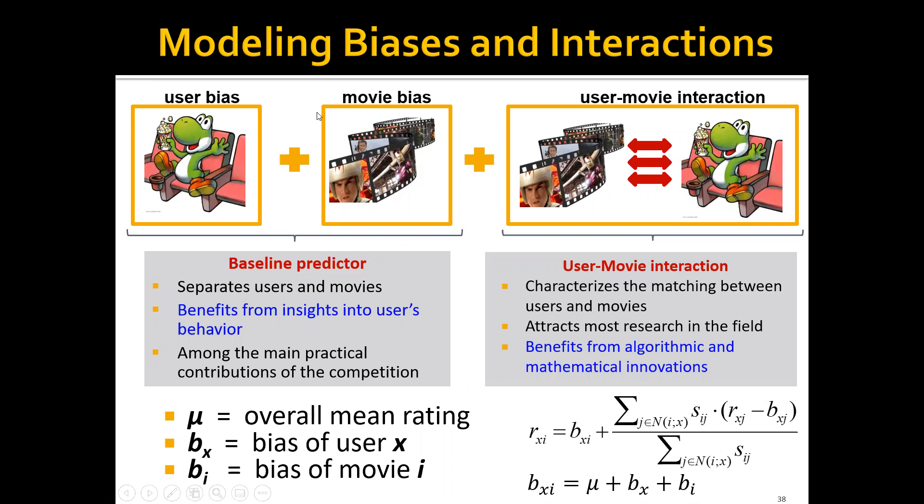In the end, the final collaborative filtering method we have actually has three terms. We have the user bias, which is the bx here. We also have the movie bias, which is the bi here. And finally, we have the user movie interaction term, which is here.